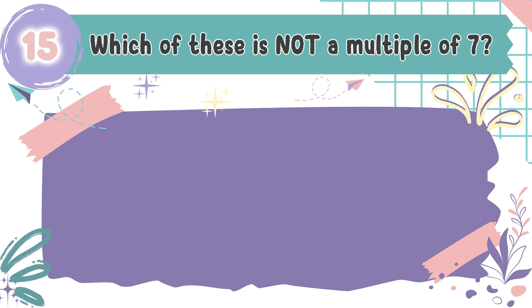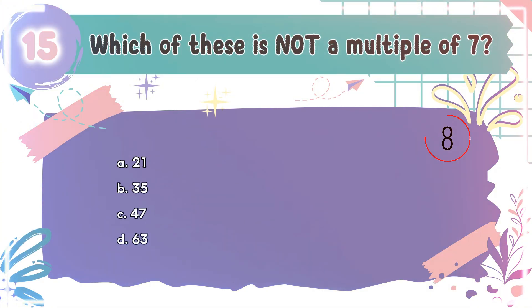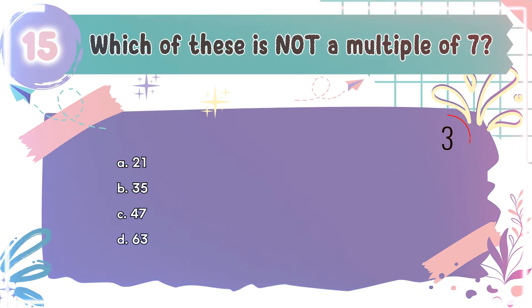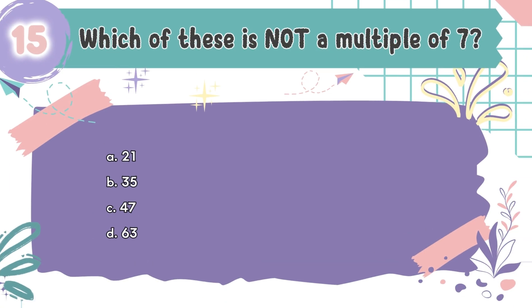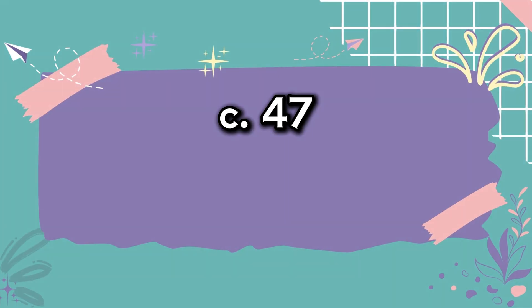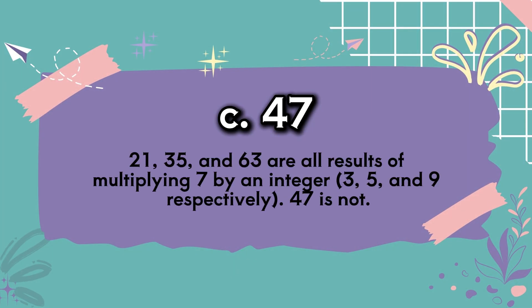Question number 15: Which of these is not a multiple of 7? The choices are A: 21, B: 35, C: 47, D: 63. The correct answer is C, 47. 21, 35, and 63 are all results of multiplying 7 by an integer — 3, 5, and 9 respectively. 47 is not.